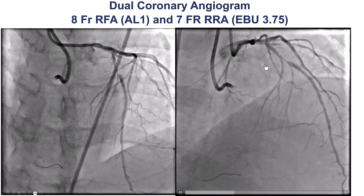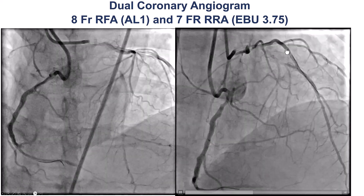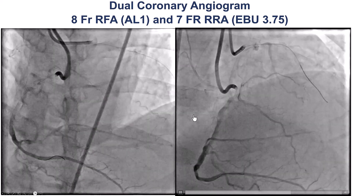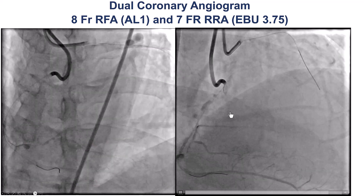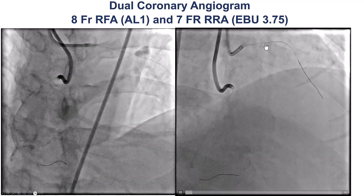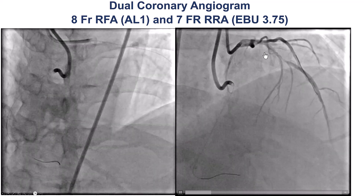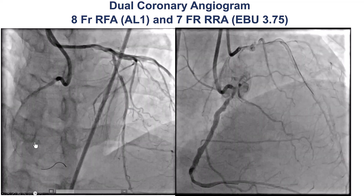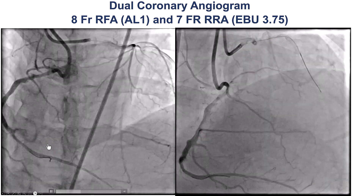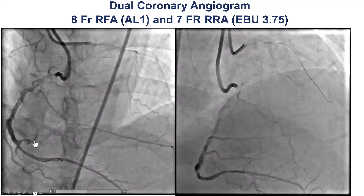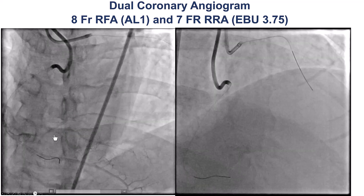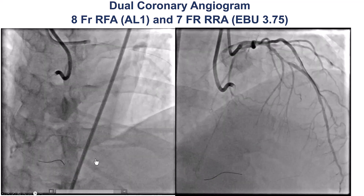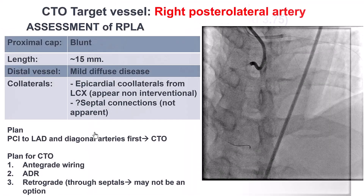This is his angiogram. He has a severe lesion in the first diagonal branch. There is also a significant lesion in the LAD and a CTO of the right posterior lateral, which is a fairly sizable vessel.